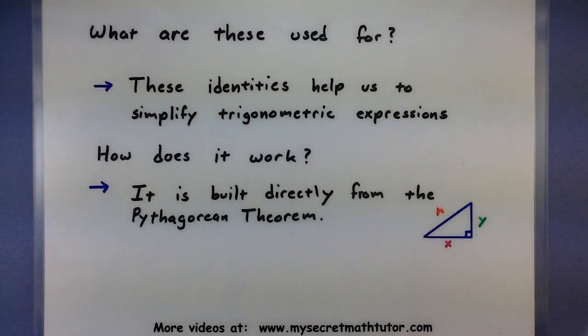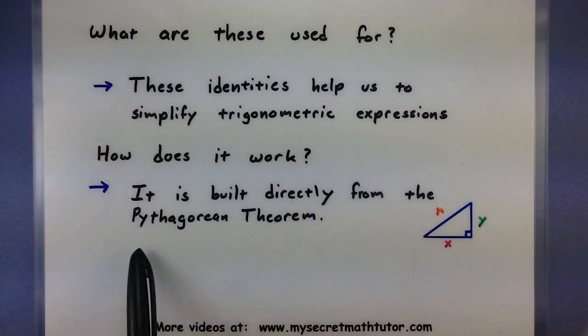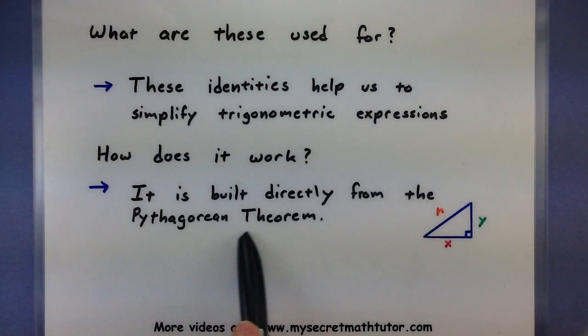Second, how on earth do they work? Well you can take the first one, sin²θ + cos²θ = 1, and really build it straight from the Pythagorean theorem. In fact that's why it has the same name, Pythagorean identities, Pythagorean theorem, they're really just the trigonometric form of that Pythagorean theorem. Let's go ahead and take a look.